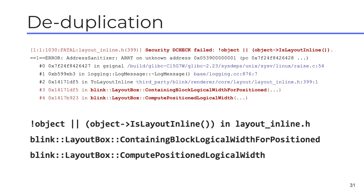Here's an example: a crash in Chrome which is actually a debug check failure. To generate the crash state, we take the error message from the dcheck failure and skip over the first three frames — the first is a libc function, the second is a logging function, and the third is an inline frame, none of which are interesting for deduplication. We skip those and take the next two frames. The result is a string that is both human-readable and usable as part of a key for deduplicating crashes.